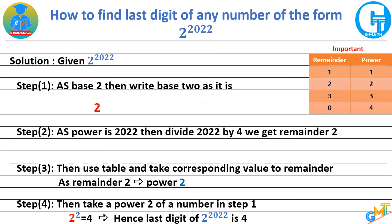Hence, the last digit of 2 raised to 2022 is 4. This is the required solution. Thank you for watching.